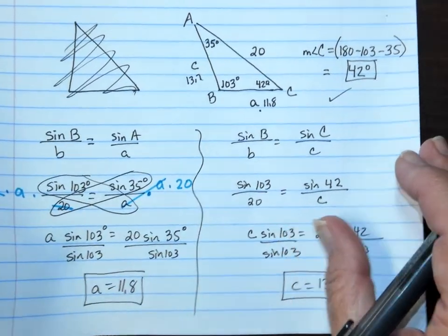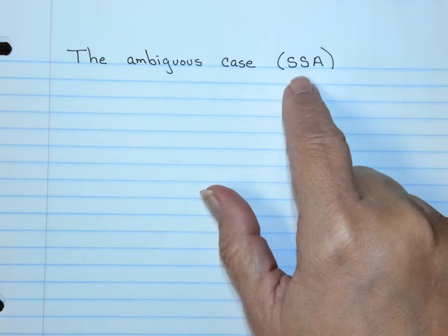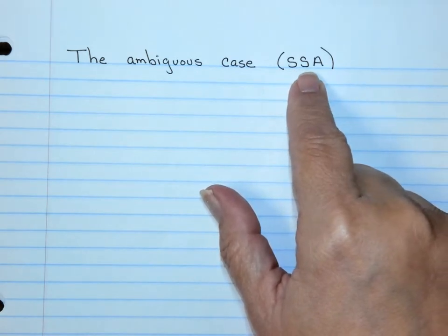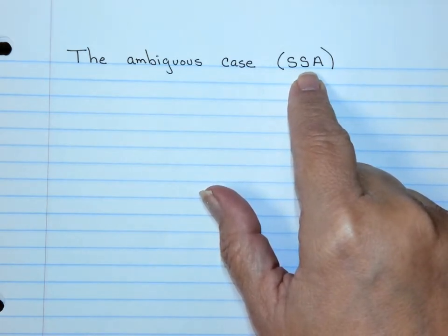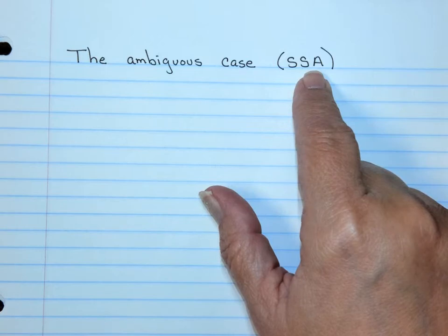All right, but now we get to the ambiguous case. Do you remember back in geometry when you were doing triangle congruence and we said side-side angle doesn't work? Your teacher may have said no bad words in geometry.